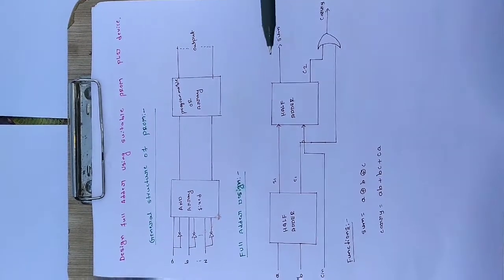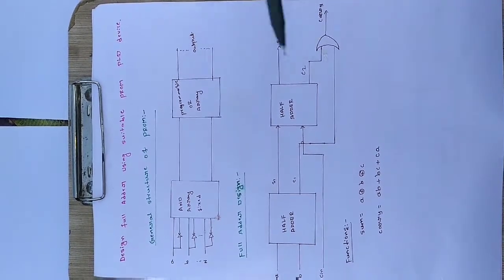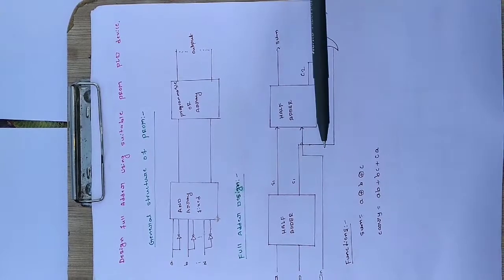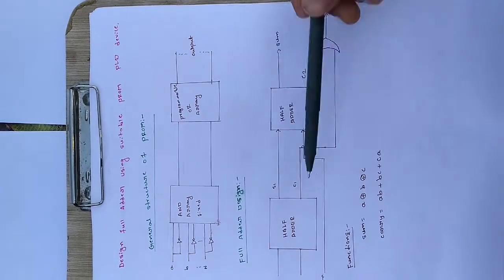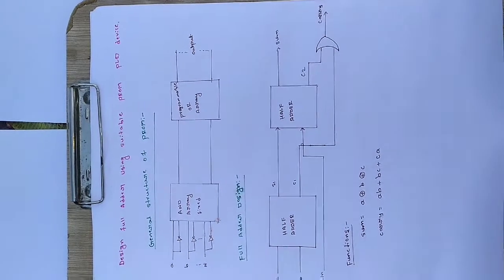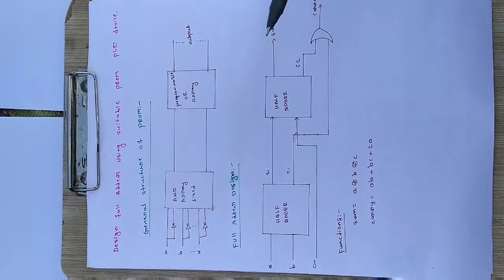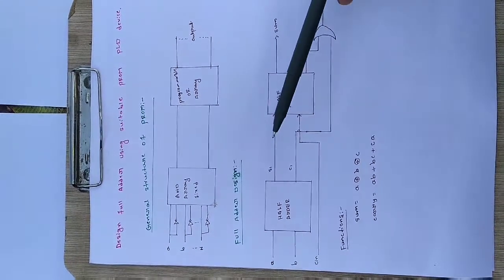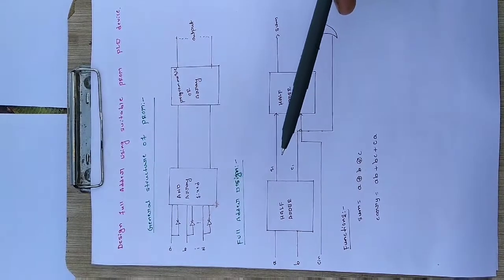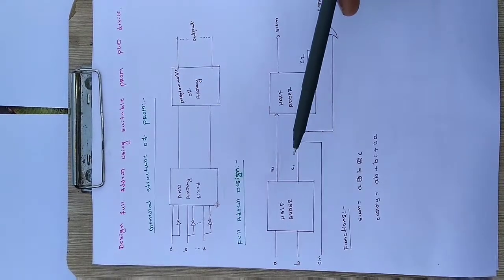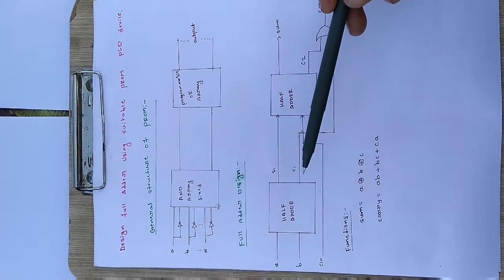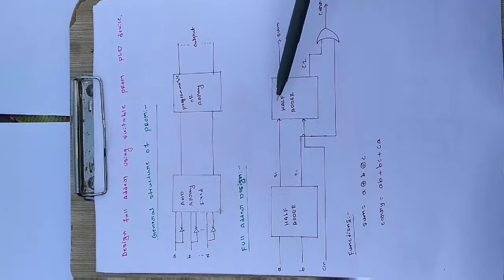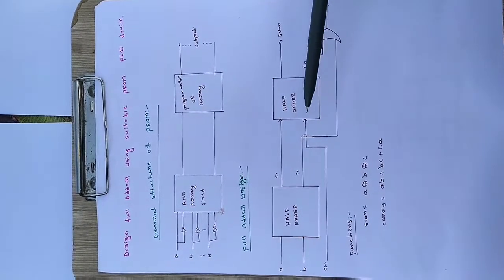Now coming to the full adder design — let us see how we can design the full adder with the help of a PLD device. A full adder consists of two half adders. The inputs for the first half adder are A and B, and C is not used for the first half adder. The output produced by the first half adder is S1 (sum one) and carry one.